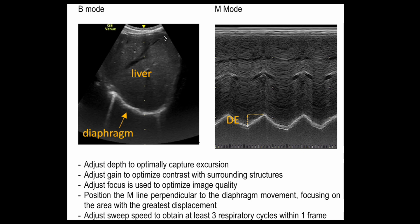Once you have the optimal image, switch to M-mode. Position the M-mode line perpendicular to the movement of the diaphragm, focusing on the area of highest movement — it is better to aim centrally rather than to the sides. Adjust the sweep speed to obtain at least three respiratory cycles within one frame.